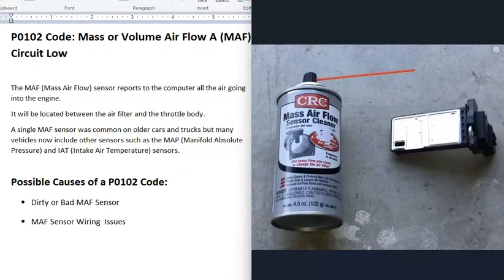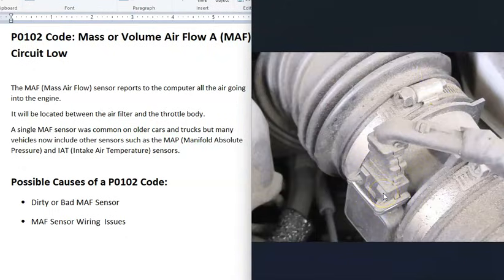If you can't get MAF sensor cleaner, a lot of people use isopropyl alcohol to clean them. It's very common for these to get dirty, so the first thing that could cause this is that it just needs to be cleaned. Of course, it's also possible that it's gone bad and needs to be replaced.